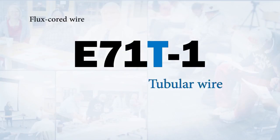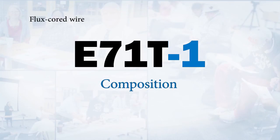Then we have our T for tubular wire, and then a dash and a number and some letters. What that's going to tell you is the composition of the wire, composition of the flux, whether you're using mixed gas or CO2, what polarity to run it on, and whether it is single pass or multi-pass. You just look that up in your technical specifications from the supplier.